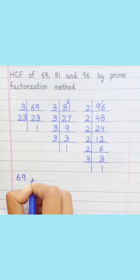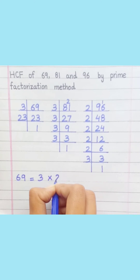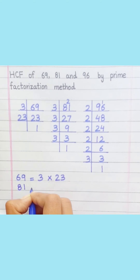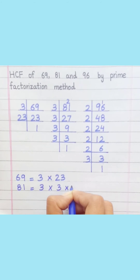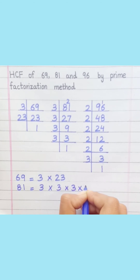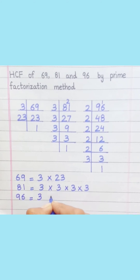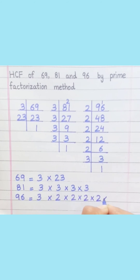69 equals 3 multiplied by 23. 81 equals 3 multiplied by 3 multiplied by 3 multiplied by 3. 96 equals 3 multiplied by 2 multiplied by 2 multiplied by 2 multiplied by 2 multiplied by 2.